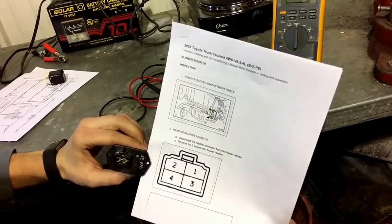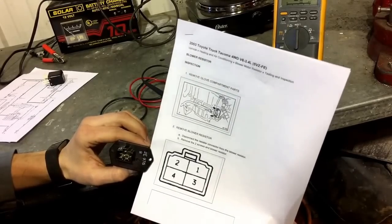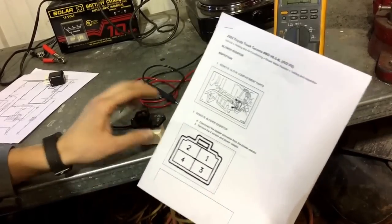And so if we go 1 to 2, that's going to be the lowest setting. 1 to 3 is medium. 1 to 4 is full. So let's go ahead and flip this over.